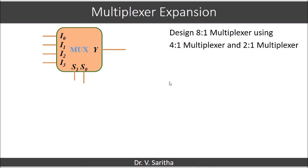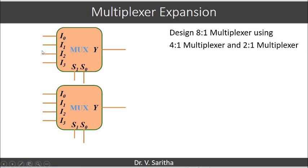So this is one 4:1 multiplexer and another 4:1 multiplexer. If you see, we are getting the inputs as required, that is 8 inputs. Here we give i0 to i3 to the first multiplexer, and i4 to i7 to the second multiplexer.